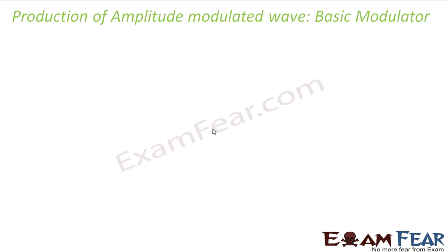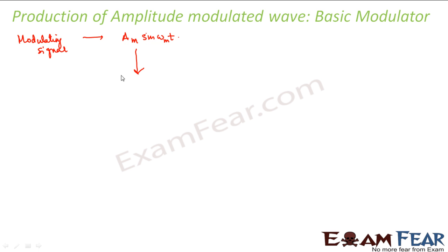The device which actually produces this modulated wave is known as a modulator. So we are now studying the structure of a basic modulator. The basic thing we have is a modulating signal, which looks like this: AM sin(ωm·t). When this modulating signal is added to a carrier wave — which looks like AC sin(ωc·t) — something happens.